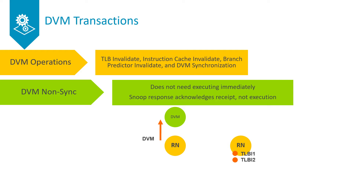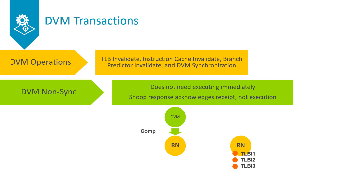After receiving a DVM snoop indicating a DVM non-sync, the RNF or RND issues a snoop response to the DVM node. The snoop response acknowledges receipt of the DVM message, but does not indicate that the request node has executed the DVM operation. The DVM node is then able to send a completion message to the initiating RNF to indicate that the DVM operation has been accepted.